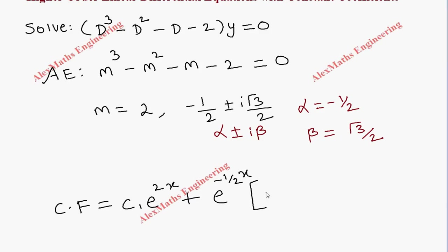This gives e^(-x/2) times the bracket [c₂cos(√3x/2) + c₃sin(√3x/2)], where β = √3/2.